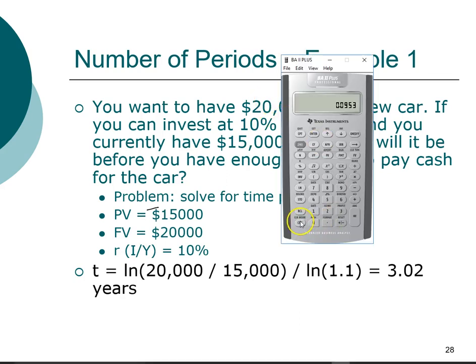If I'm using the calculator, I need to clear not just the numbers but also do a second function clear TVM. $20,000 is our future value. $15,000, remember that's an outflow, so we need to change the sign to negative $15,000 for the present value. The interest rate is 10%. We need to compute N, so we get the same answer, approximately 3.02 years.